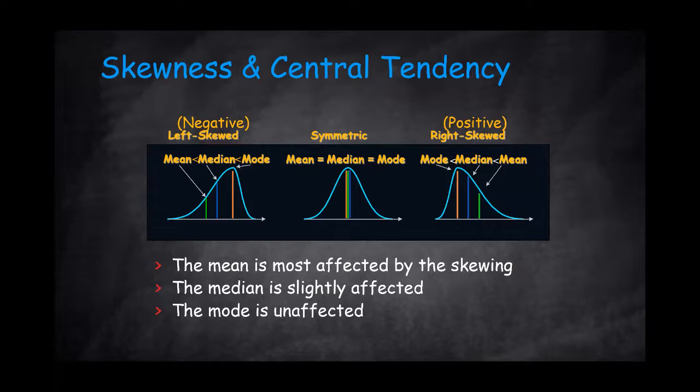And what we see in a bell-shaped histogram, when the histogram is symmetric, the mean, median, and mode will be the same.